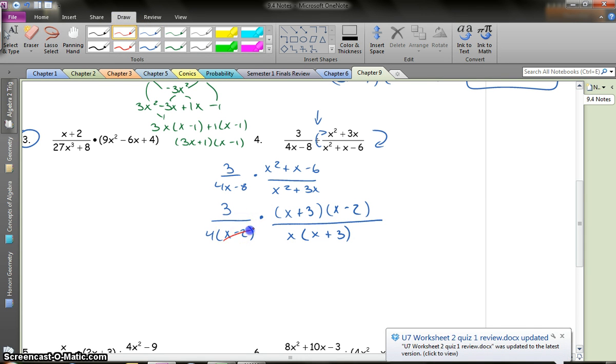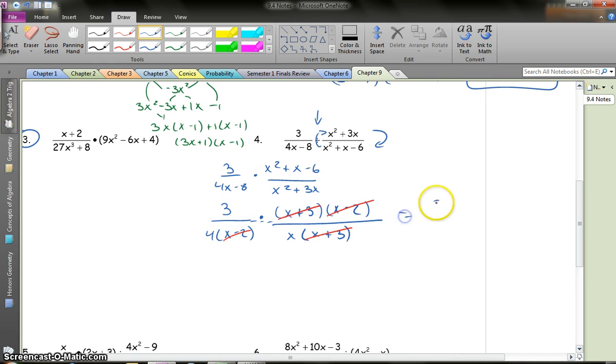Let's take a look here. x minus 2, x minus 2, x plus 3, x plus 3. Again, we view it as one giant fraction. So my numerator, I'm left with 3. My denominator is 4 times x. So I'm left with 4x. So that's what the canceling stuff looks like.